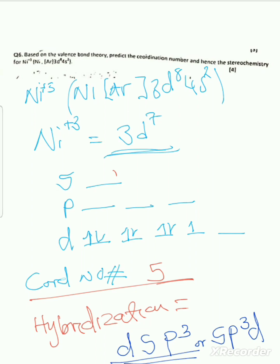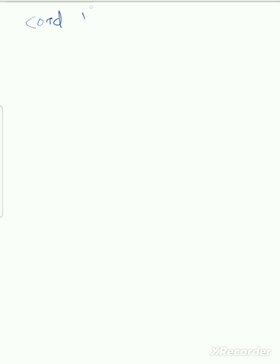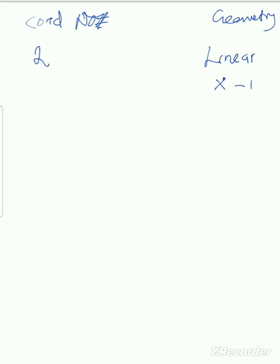When they ask you to find the stereo geometry, you need to know the coordination number and match it to the correct geometry. For coordination number two, the geometry is linear — for example, X–ligand–ligand at 180 degrees.